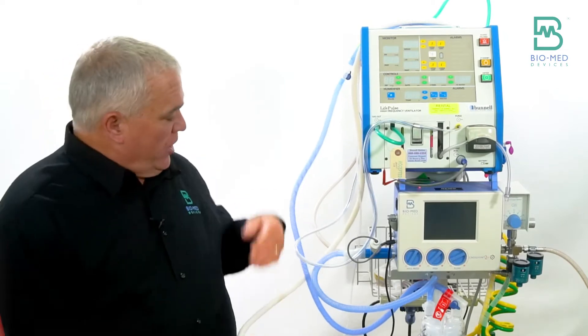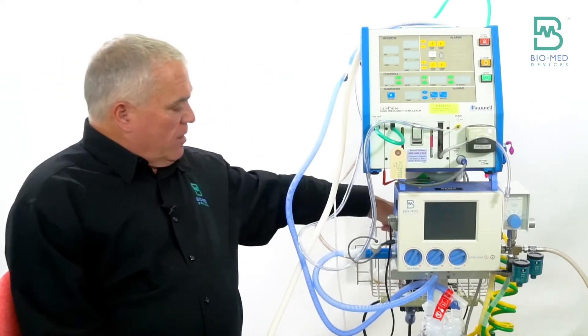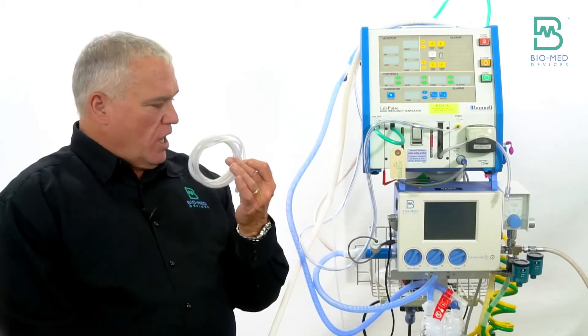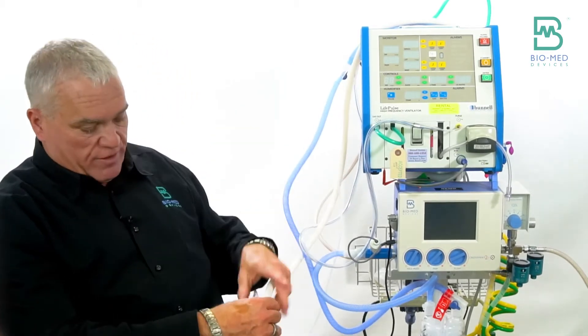The next thing we're going to use is the circuit comes with a pressure line. Normally you don't need that pressure line with your ICU vent, but you will with the Crossvent.